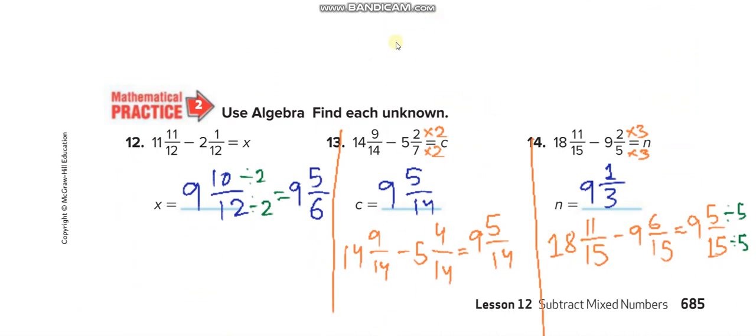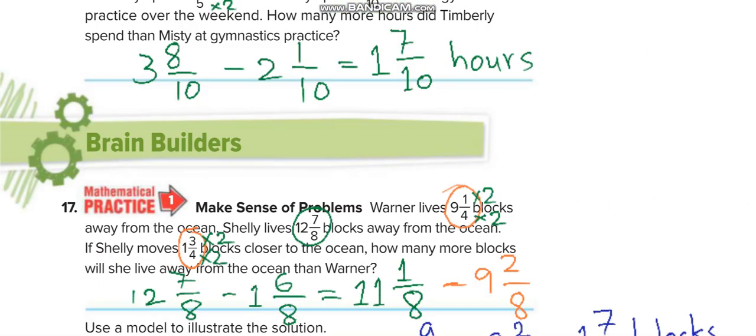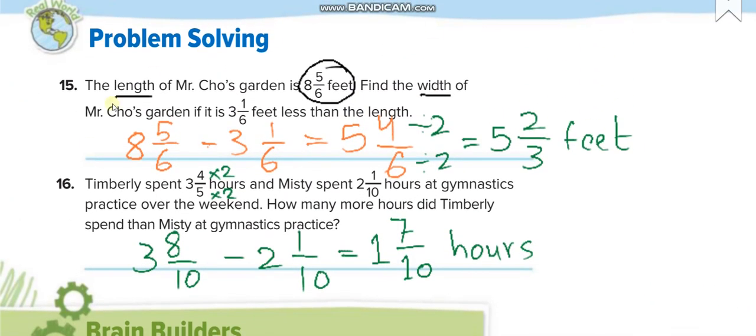You have to solve the above questions with this much detail. Now, the length of Mr. Chu's garden is this much feet. Find the width of Mr. Chu's garden if it is 3 1/6 feet less. So you minus this one from it, it's 5 4/6, then we simplify it to 5 whole and 2/3.